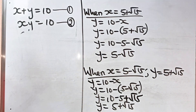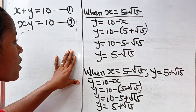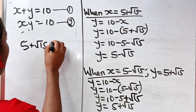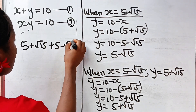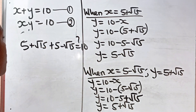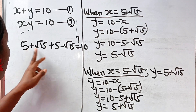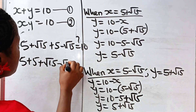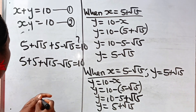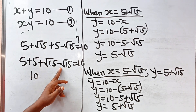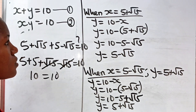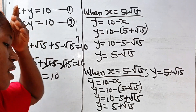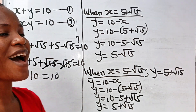Let's prove that the answer we got is actually correct. Using the first equation, x plus y equals 10. Using the first pair: (5 plus root 15) plus (5 minus root 15) equals 10. Collecting like terms: 5 plus 5 is 10, and plus root 15 minus root 15 is 0, so 10 equals 10. If you also multiply them, you can use the difference of two squares and still get 10 as your solution. Thank you so much for watching — see you in my next video, bye!